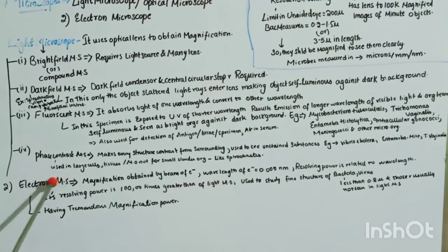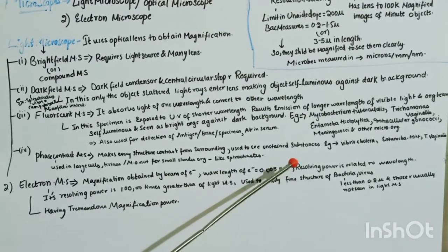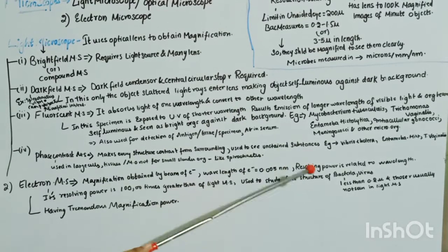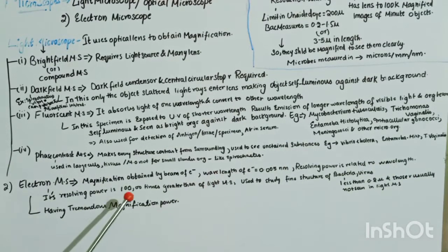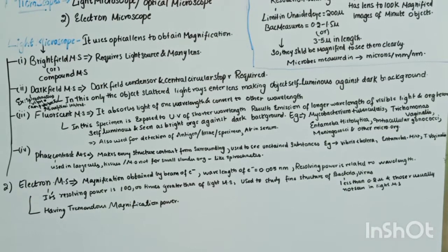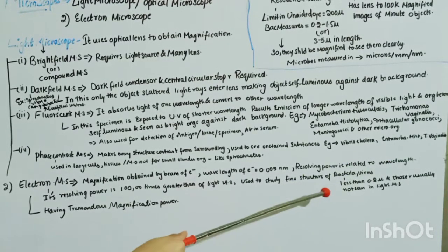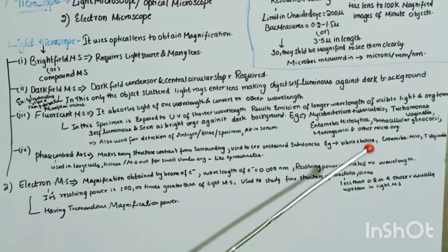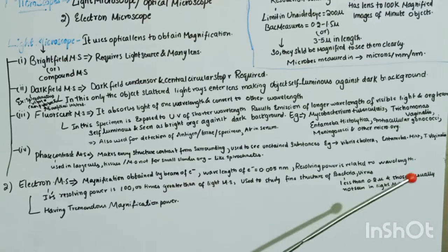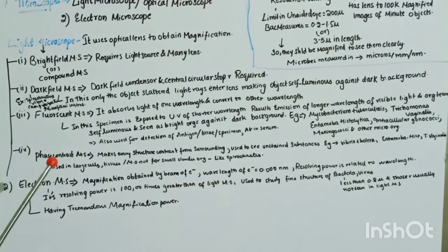The electron microscope uses a beam of electrons instead of light. The wavelength of electrons is 0.05 nanometers, and its resolving power is 10,000 times greater than that of a light microscope. It is used to study the fine structure of bacteria and viruses which are less than 0.2 microns and cannot be seen using a light microscope. Electron microscopes have tremendous magnification power.